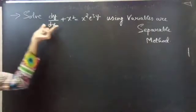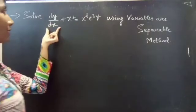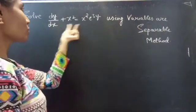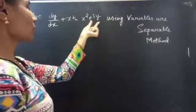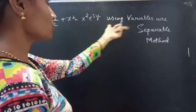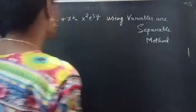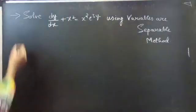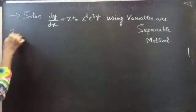Problem: solve dy/dx plus x squared equals x squared into e to the power 3y, using the variables separable method. Solution: